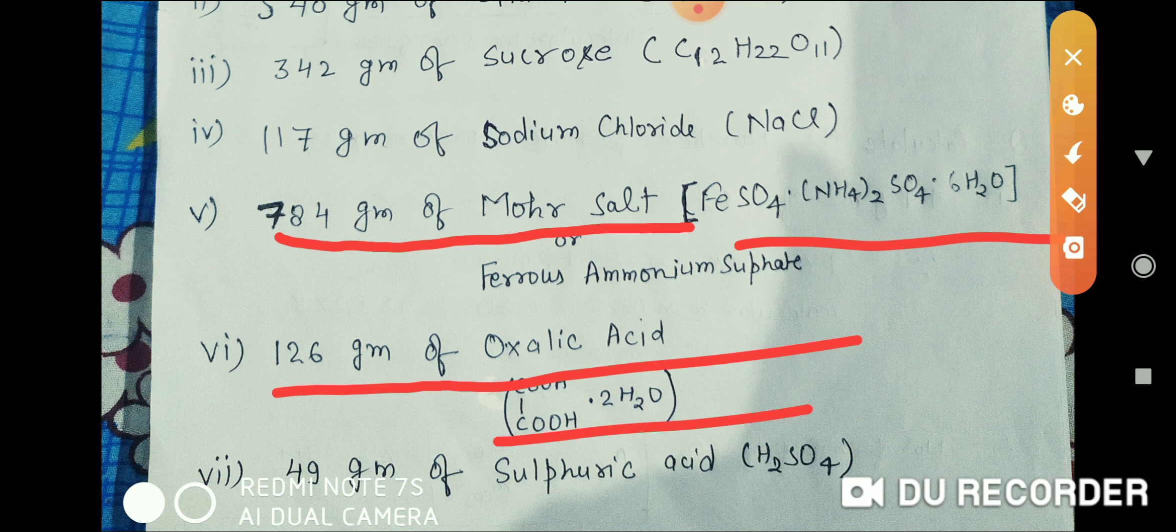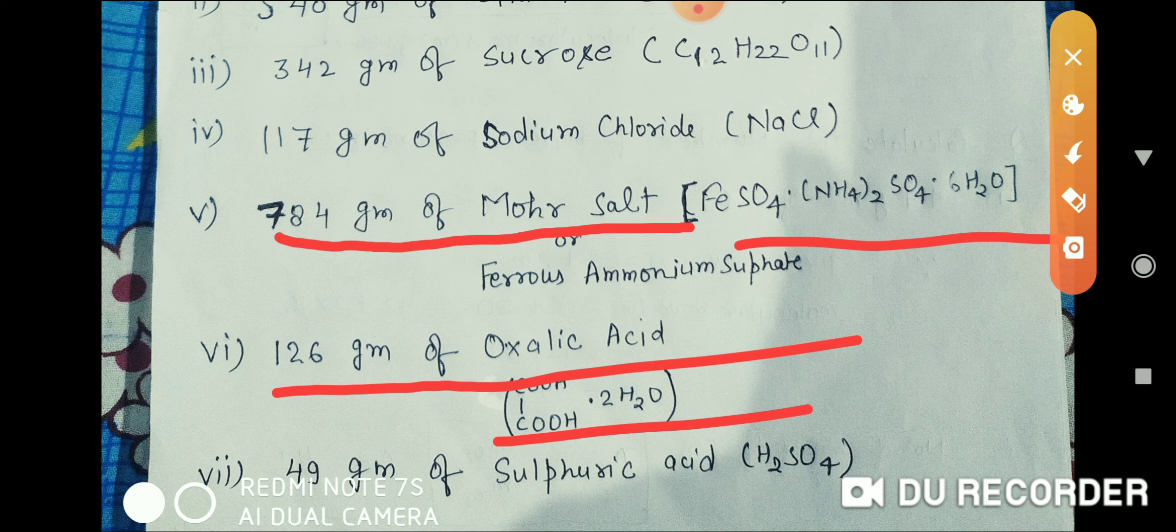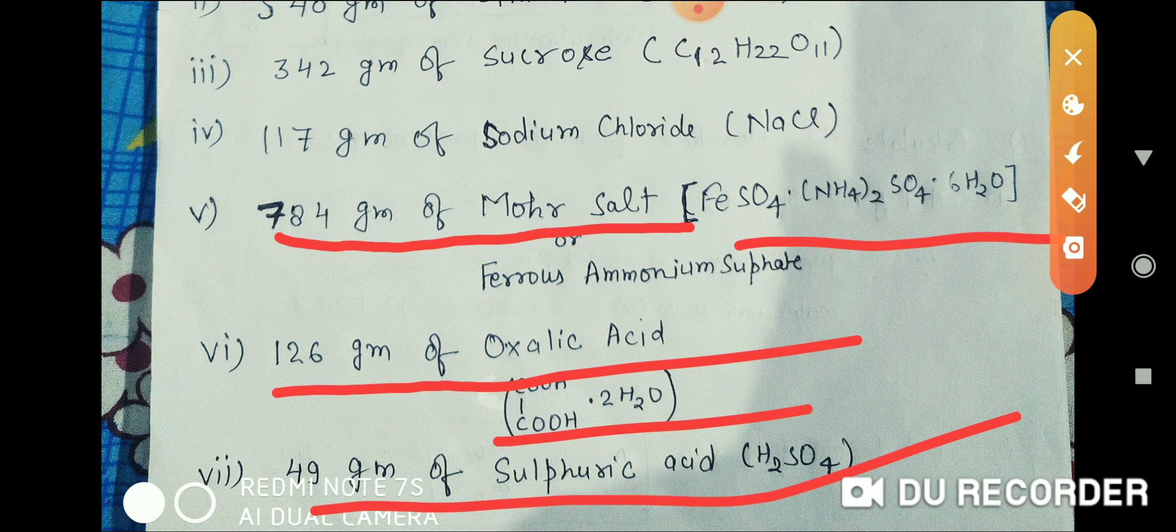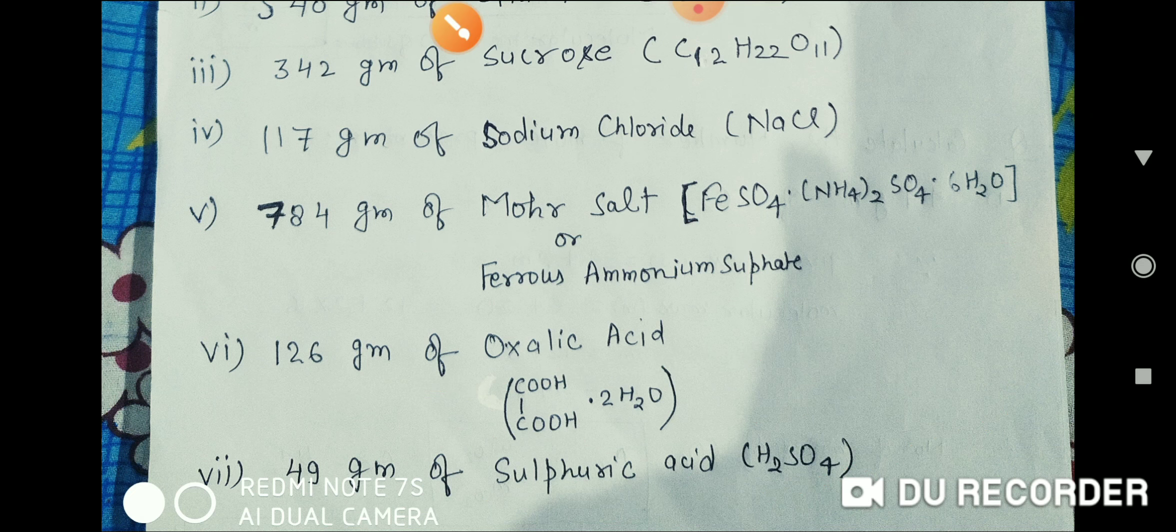The formula for oxalic acid is H2C2O4. (vii) 49 grams of sulfuric acid (H2SO4). So this is your homework and you have to do it. Thank you.